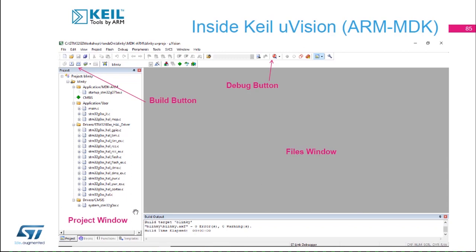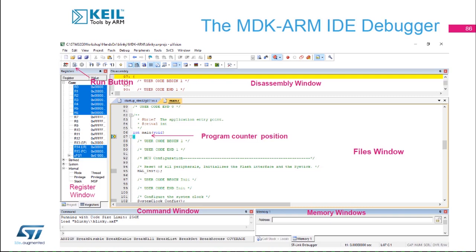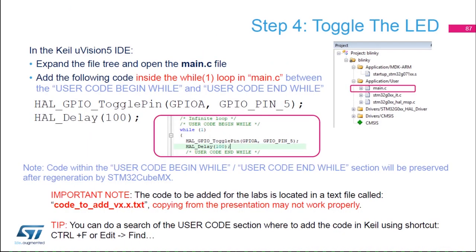In the file window, if you double-click on main.c, it will appear there. The build button — two arrows down — is located in the toolbar. The debug button has a D in red. When you click it, you enter the debug session. At the top you'll find the run button — one arrow down. The program counter location is shown in the file window. On the lower side you'll find the command window and the memory window.